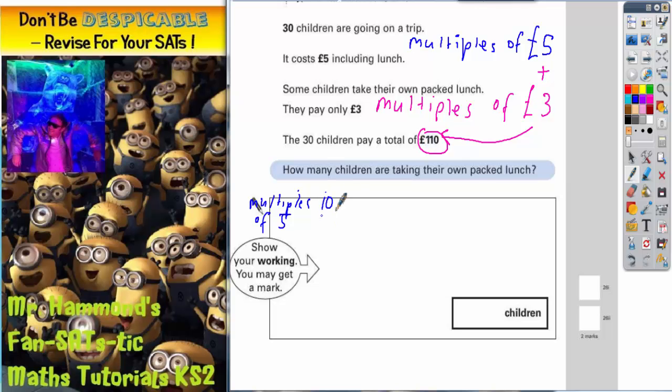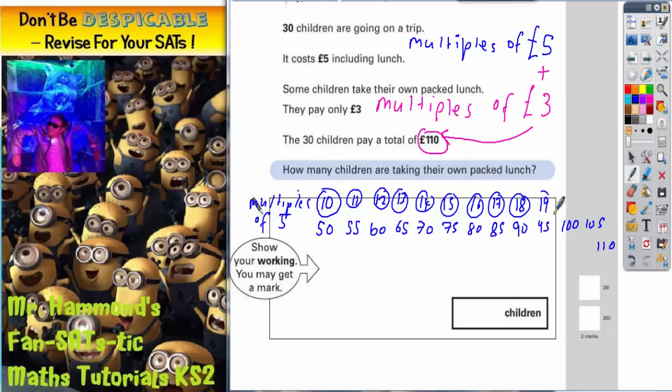So 10 children, 10 lots of 5 would be 50, 11 children would be 55, 12 children would be 60, then 65, 70, 75, 80, 85, 90, 95, 100, 105, 110. So we can't go over 110 because the total cost is only 110. So 65 would be 13 children, 14, 15, 80 would be 16, 85 is 17, 90 would be 18, 19, 20, 21, 22 children.